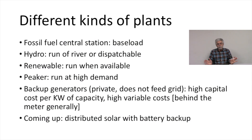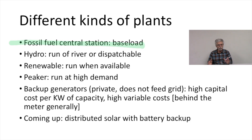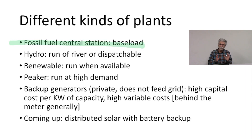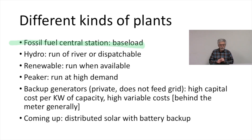There's the classic fossil fuel central station baseload power plant — a big new coal-fired power plant or a big new natural gas combined cycle unit. These plants are generally used for baseload capacity. Coal-fired plants are not designed to ramp up and down repeatedly, so we'll tend to want to run them as baseload. Natural gas plants can ramp a little faster and follow loads a little better, so depending on whether we want a plant to run steady all the time or to ramp, we might consider a different mix of coal and natural gas.